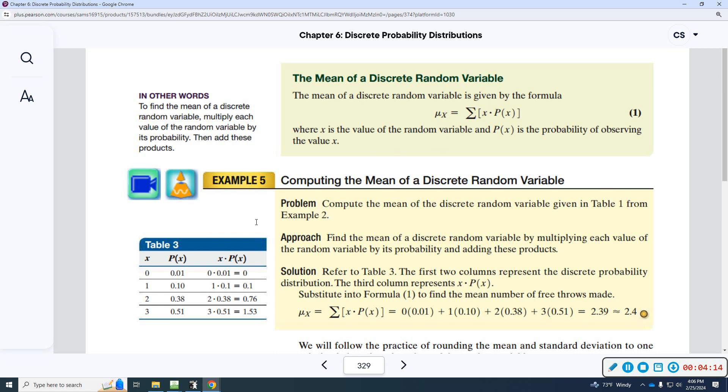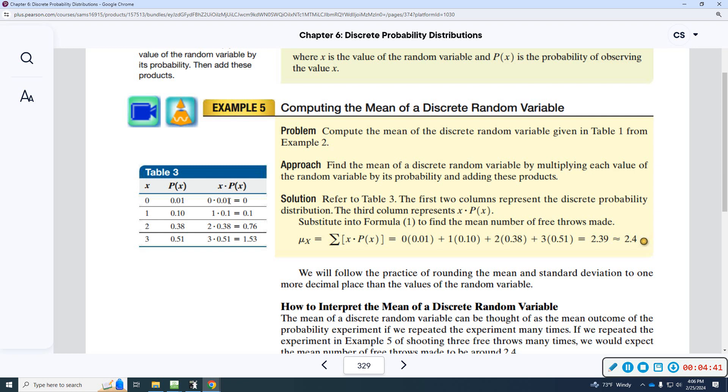To find the mean, you're going to multiply each value, x value, whatever that random variable is, each value times the probability. That's what this is saying, x times the probability of that outcome. And once you get those, you're going to add them all up. That's what this is, the summation. You're going to add up each probability times the random variable x. You can also see the same thing in the table. 0 times 0.01, 1 times 0.1, and so on. And when you add those up, we get approximately 2.4. So, this is the mean.